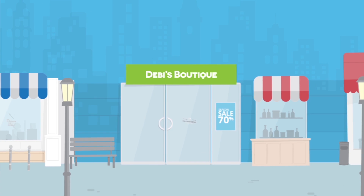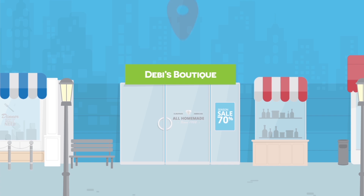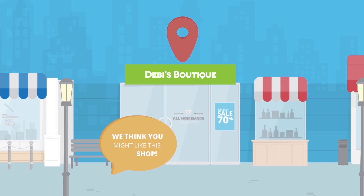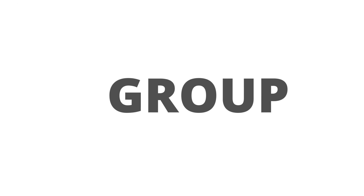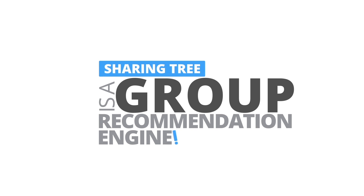However, SharingTree is much more intelligent than your basic deal finder. It will actually predict the information you'll be most interested in based on the preferences and geographical travel patterns of you and your friends. In other words, SharingTree is a group recommendation engine.